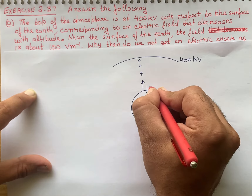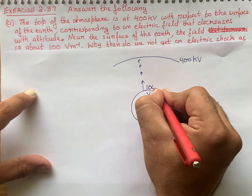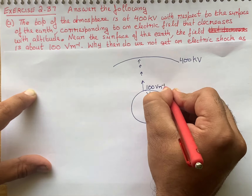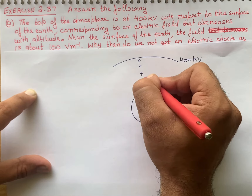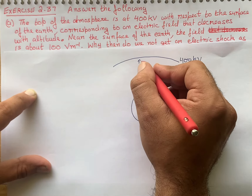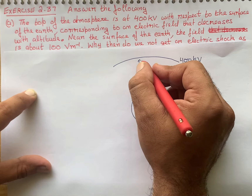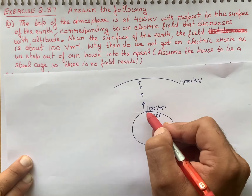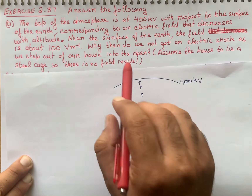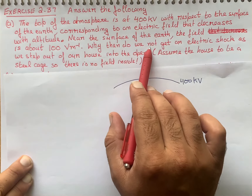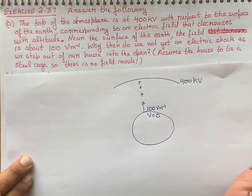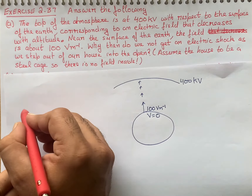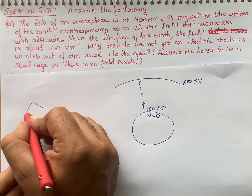Is question mein humhare paas pehle kya aya hai? Ki dekho jo atmosphere hai, like hum earth maante hain, jo earth ke paas top layer of atmosphere hai, us mein potential kitna hai — mere paas 400 kilovolt, with respect to the earth surface. Toh earth surface ka potential kitna hota hai — yeh hum sabhi ko malum hai — zero.